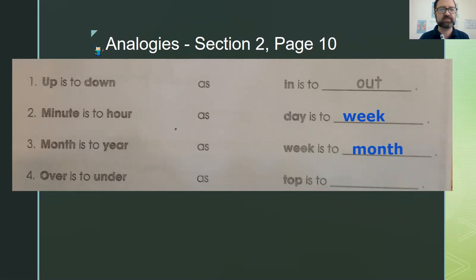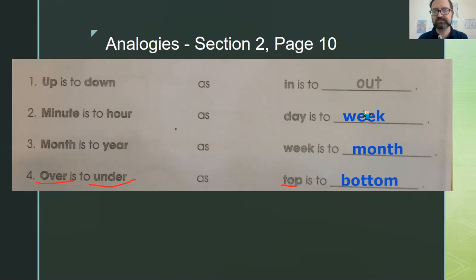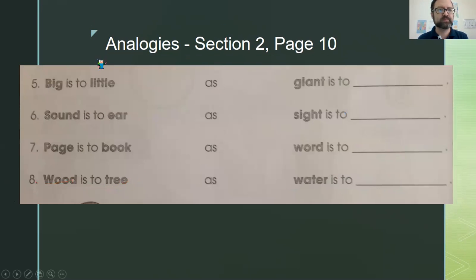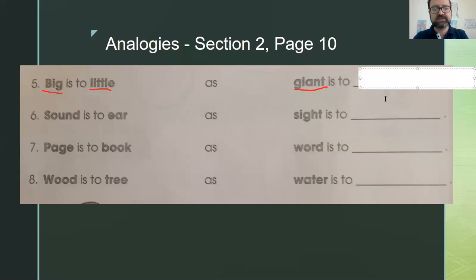Next: over is to under as top is to bottom — over is the opposite of under, and top is the opposite of bottom. Then: big is to little as giant — which is also very big — is to tiny, because tiny means very very small.